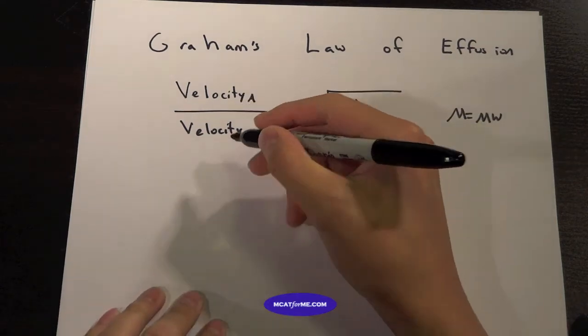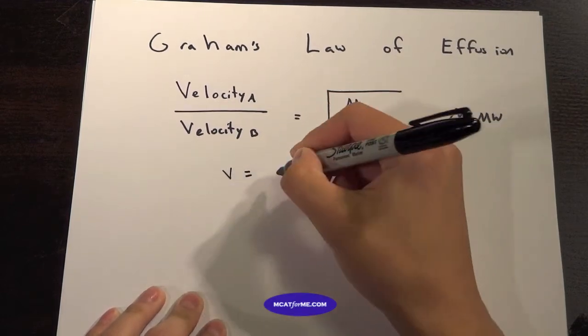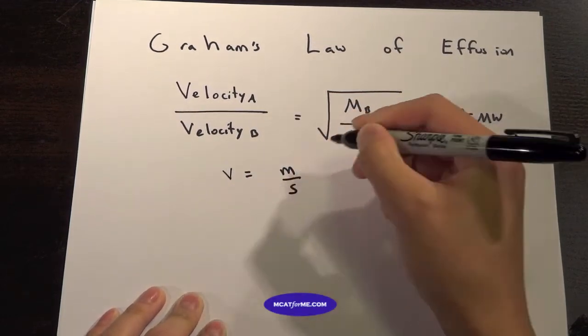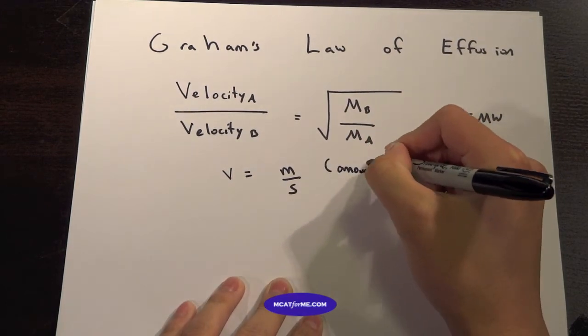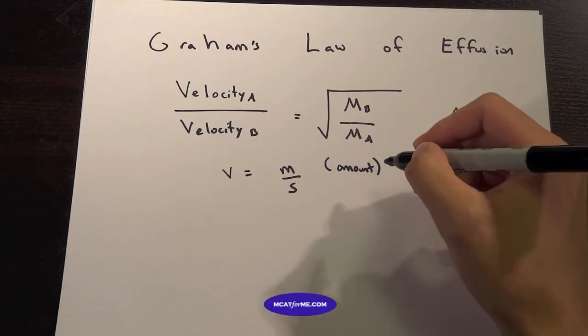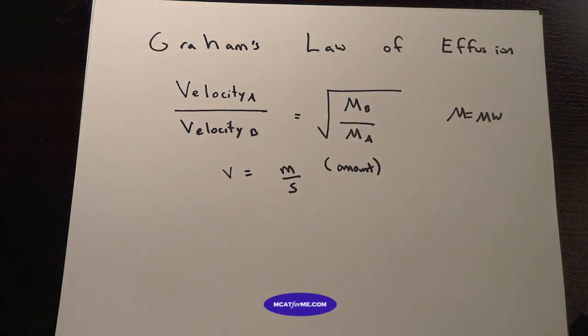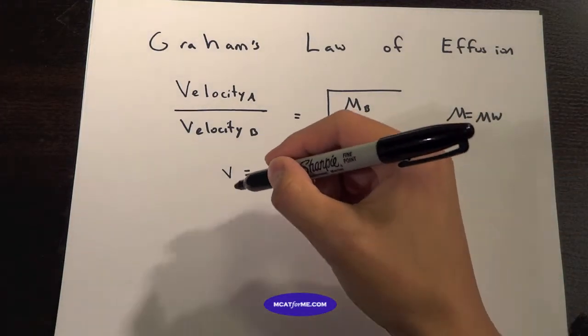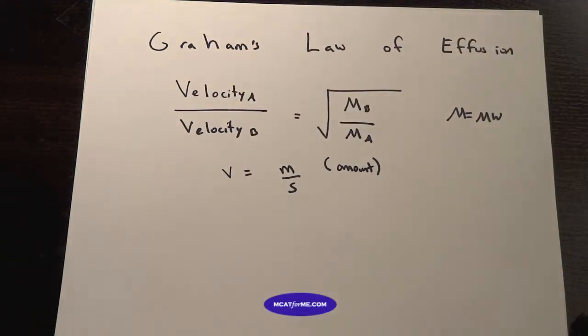Just to be clear, velocity equals distance per second. But in this case, we can also think of this as amount - the distance can be the amount per second. That's why velocity and amount are directly proportional. If something is moving very fast, it'll also be high in amount. That's why we can use Graham's law of effusion.